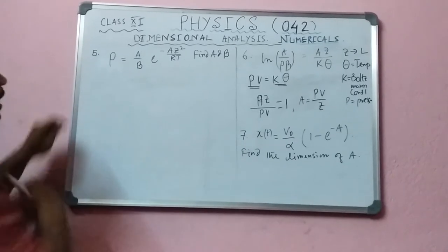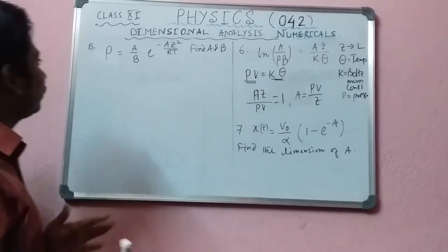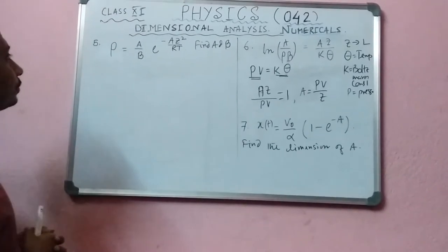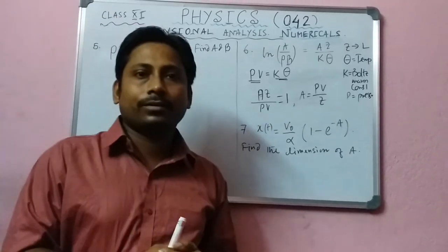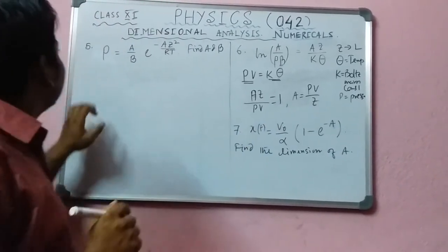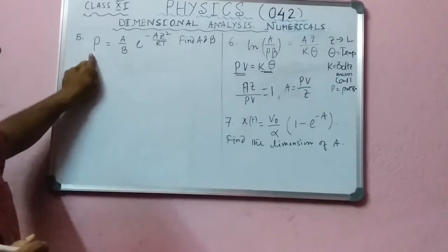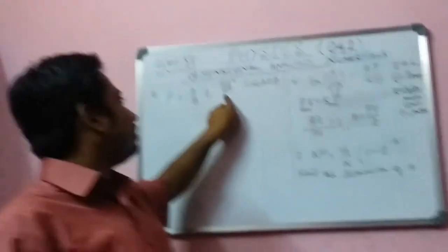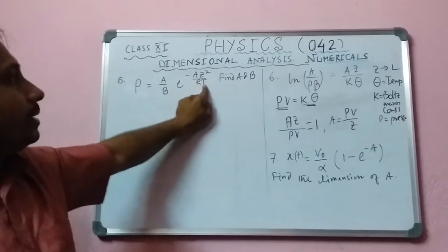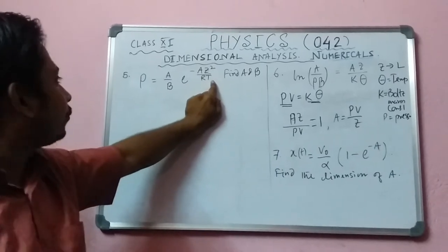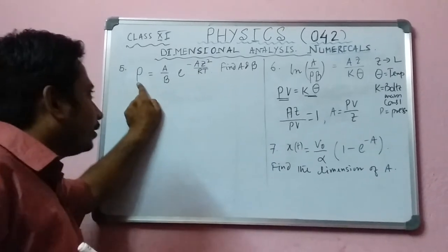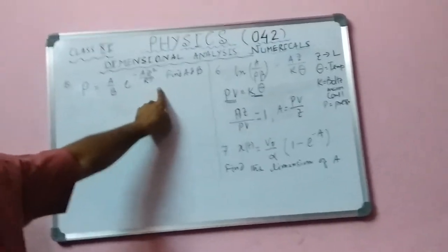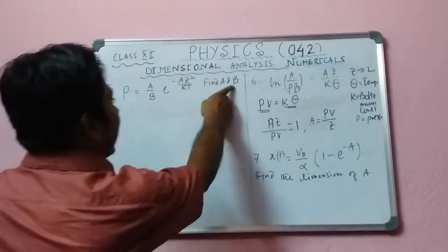In question number five: p means pressure, z means length, R means gas constant, and T means absolute temperature. You have to find the dimensions of a and b. Try it now.